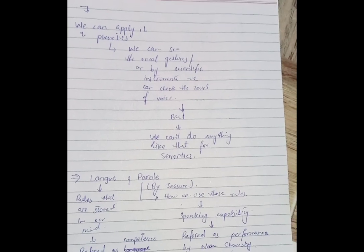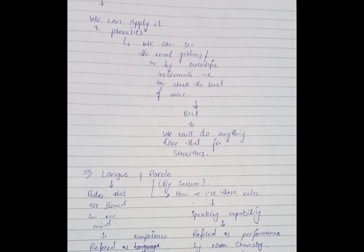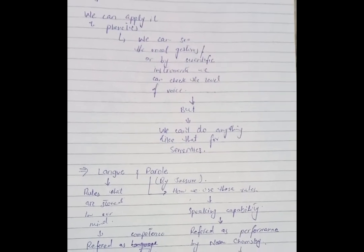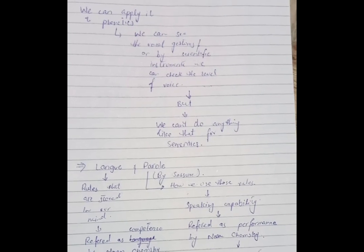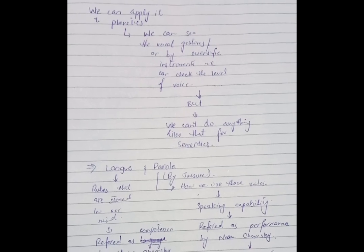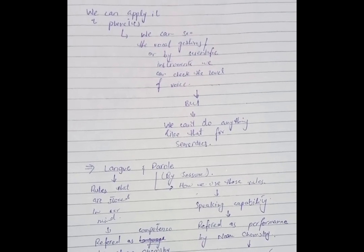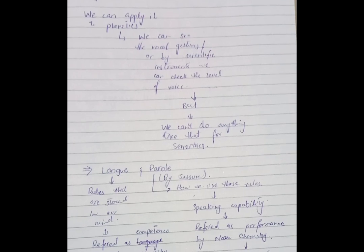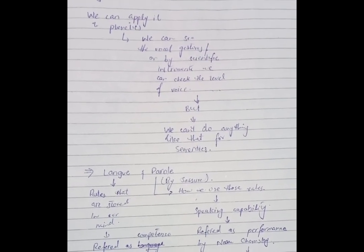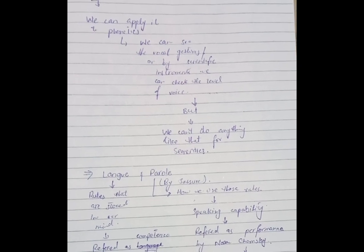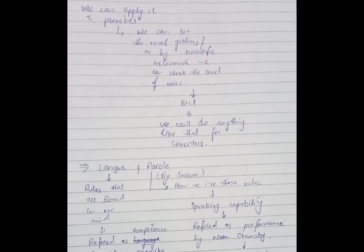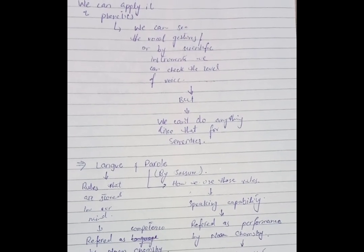Next, we come to the Lang and Parole concept. Lang and Parole are two terms given by Ferdinand de Saussure. He termed Lang as the rules or regulations that are stored in our mind. Parole refers to the speaking ability — the usage of the rules and laws present in our mind — which is our speaking capability.